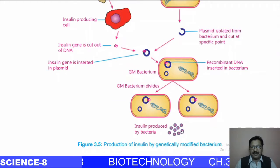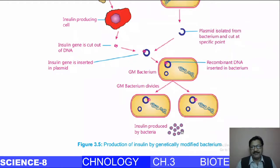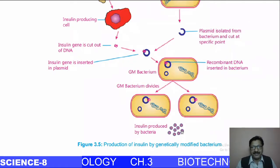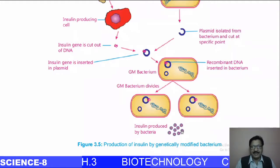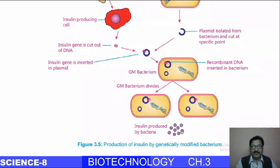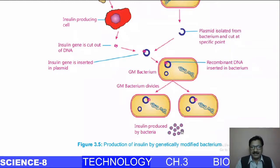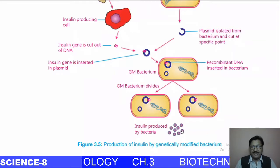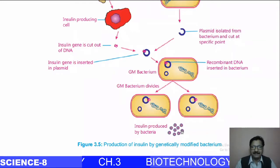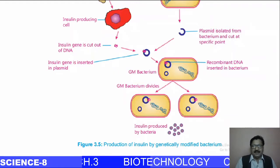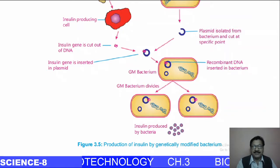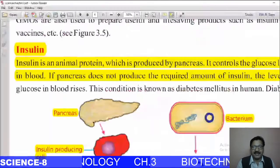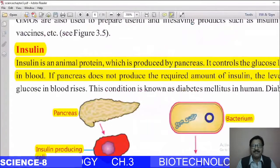The required insulin is produced with the help of bacteria. Bacteria reproduce rapidly, which is why we use this organism. As a result, patients with diabetes are treated well. In earlier times, insulin was taken from animals; nowadays scientists prepare it with the help of bacteria.